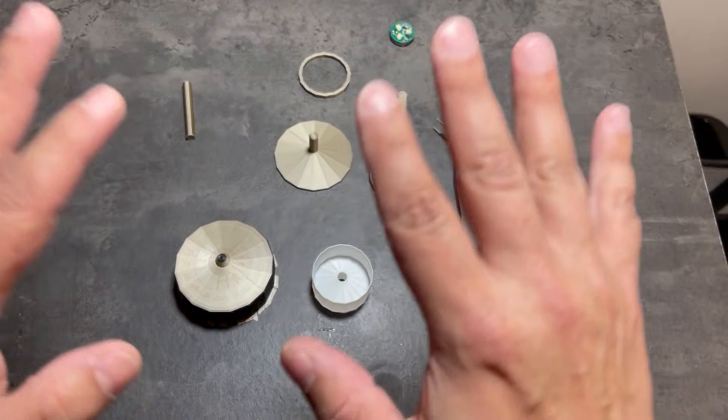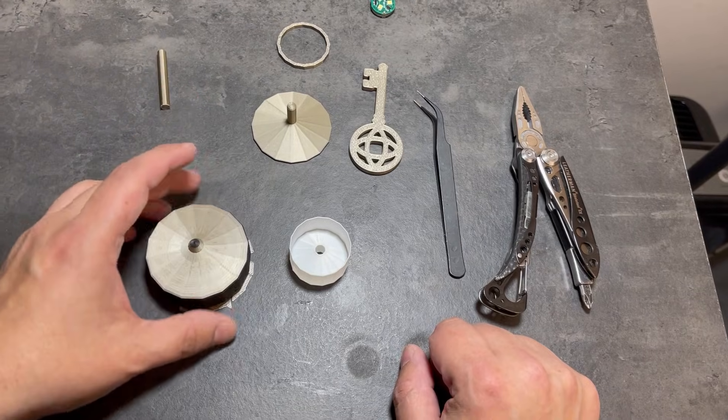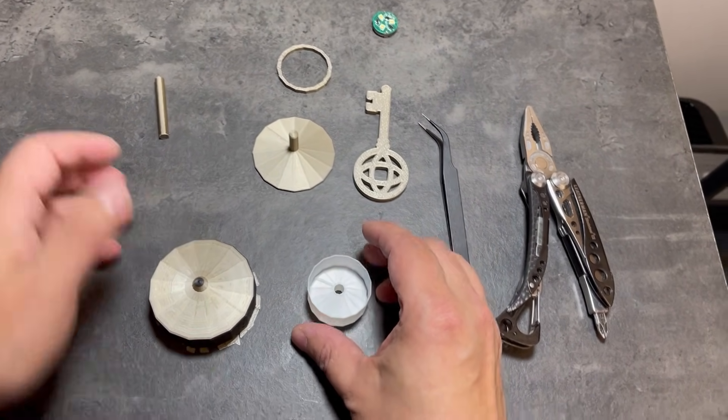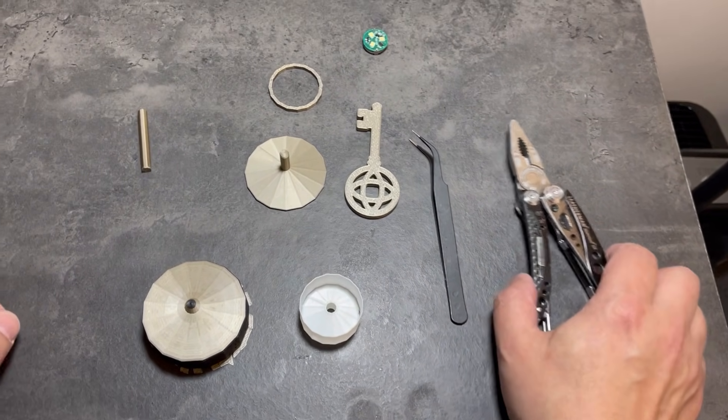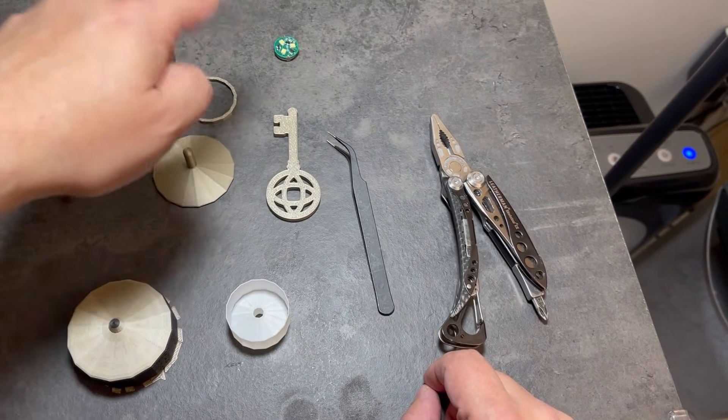So this is all the parts for both versions. Both versions have the cipher, the main body at the top, and the light diffuser. The version that doesn't require an LED has this peg, and then the version that does require an LED has the cap, the plug, the key, and the LED.